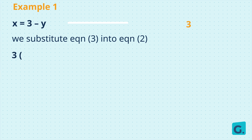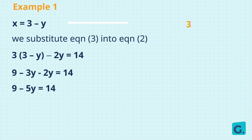So we get 3 bracket 3 minus y close bracket minus 2y equals 14. 3 multiplied by 3 is 9, and 3 multiplied by minus y is minus 3y. So our equation becomes 9 minus 3y minus 2y equals 14.